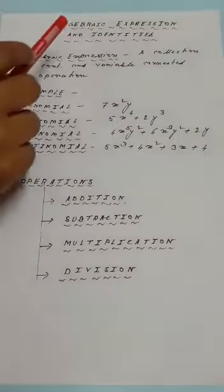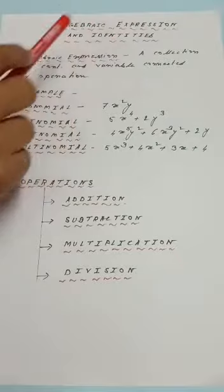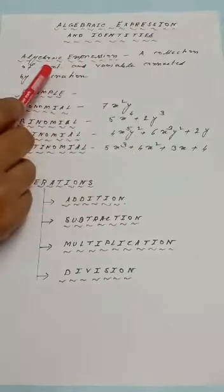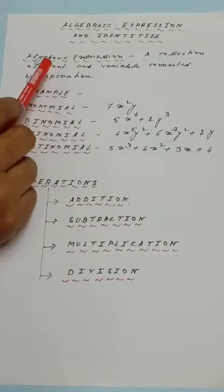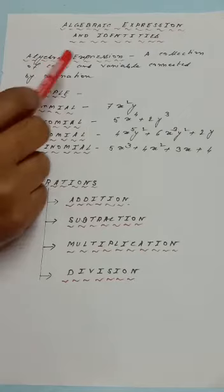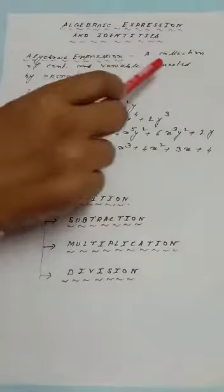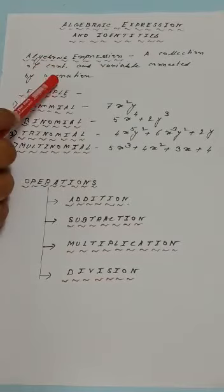Let's come to the main topic: Algebraic Expression and Identities. The definition of an algebraic expression is a collection of constants and variables connected by operations. Constants are all real numbers from minus infinity to plus infinity. Variables are x, y, z. Operations include addition, subtraction, multiplication, and division.